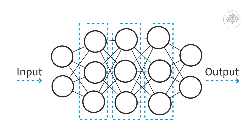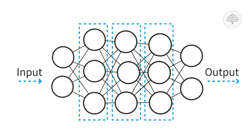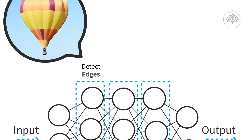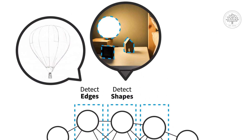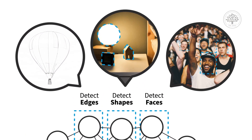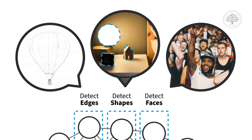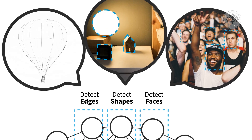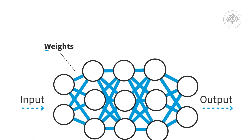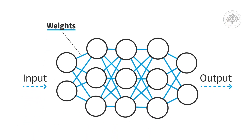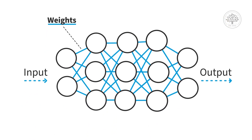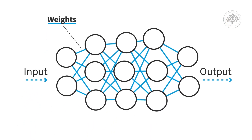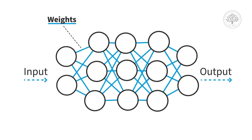Each layer can perform a specific function, such as detecting edges, shapes, or faces in an image. The layers are connected by weights, which are adjusted during the learning process to optimize the output.